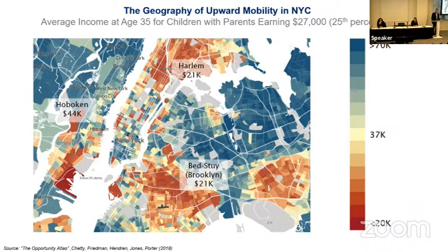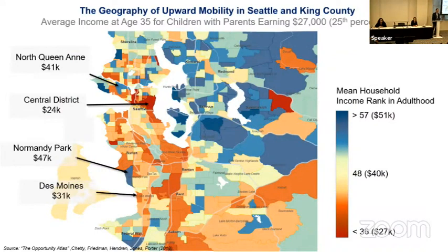In Brooklyn, kids grew up to earn about $21,000 a year. Contrast that with across the river in New Jersey — sorry for the New Yorkers in the room — but they earn about $44,000 a year, twice as much. You see wide variation even at fairly short distances for kids growing up in different neighborhoods across New York. A similar picture holds for kids growing up in Seattle. In South Seattle and downtown, people who grew up in the Central District area earn on average about $24,000–$25,000 a year. If you go into Queen Anne or Normandy Park neighborhoods, earnings are in the mid-40s. If you go out into the suburbs — Kirkland, Bellevue, Redmond — you're in the $40,000 to $50,000 a year range.